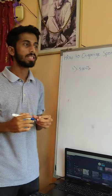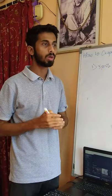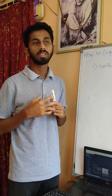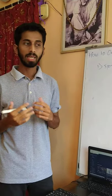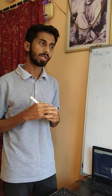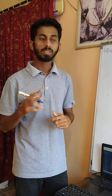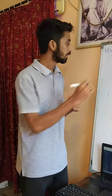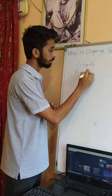Once you have finalized that you are going to organize a particular sport, the second step will be to understand on which scale you want to organize this event. Is it on a district level, a state level, a national level, or an international level? That's the second point: level of the event.